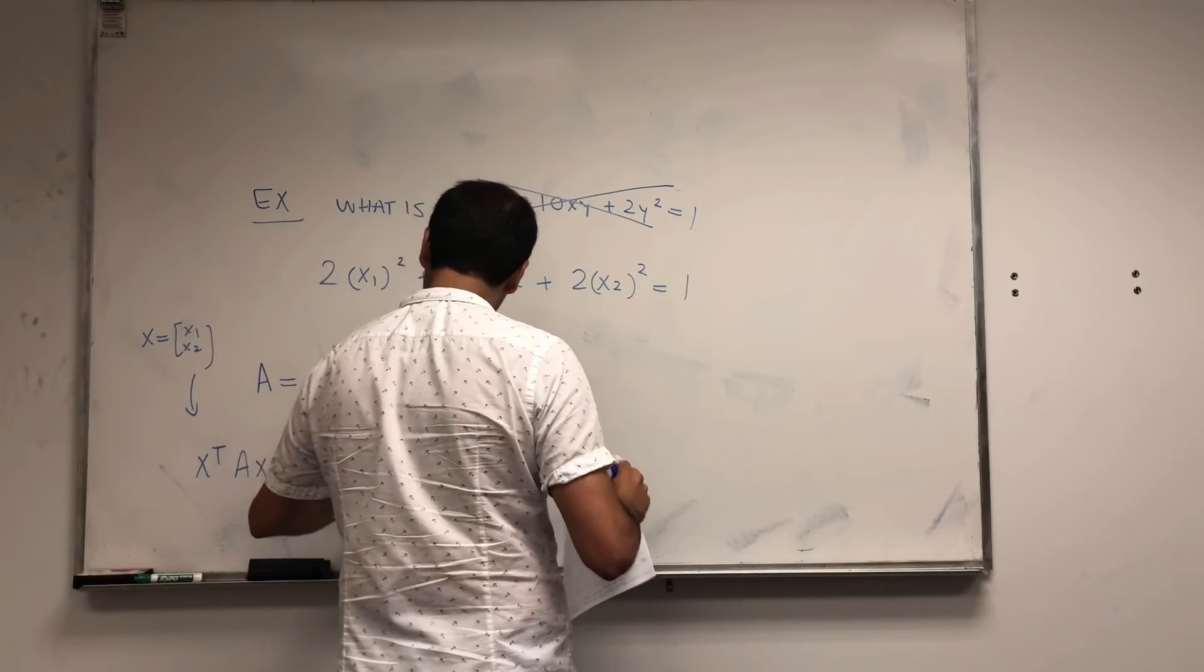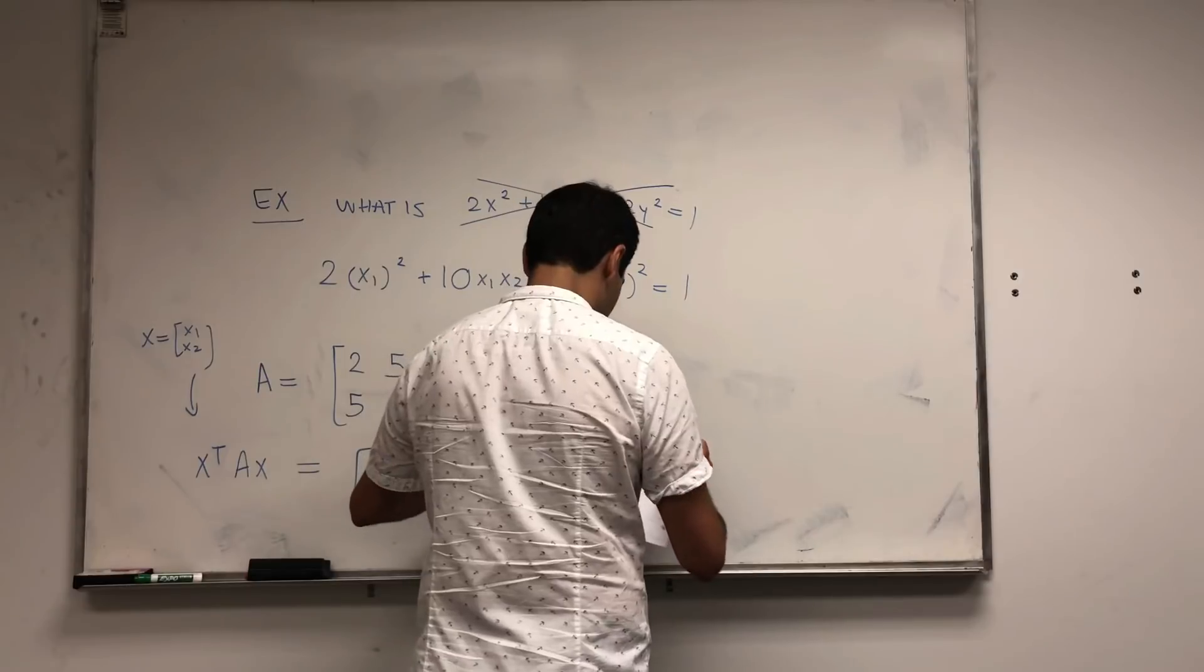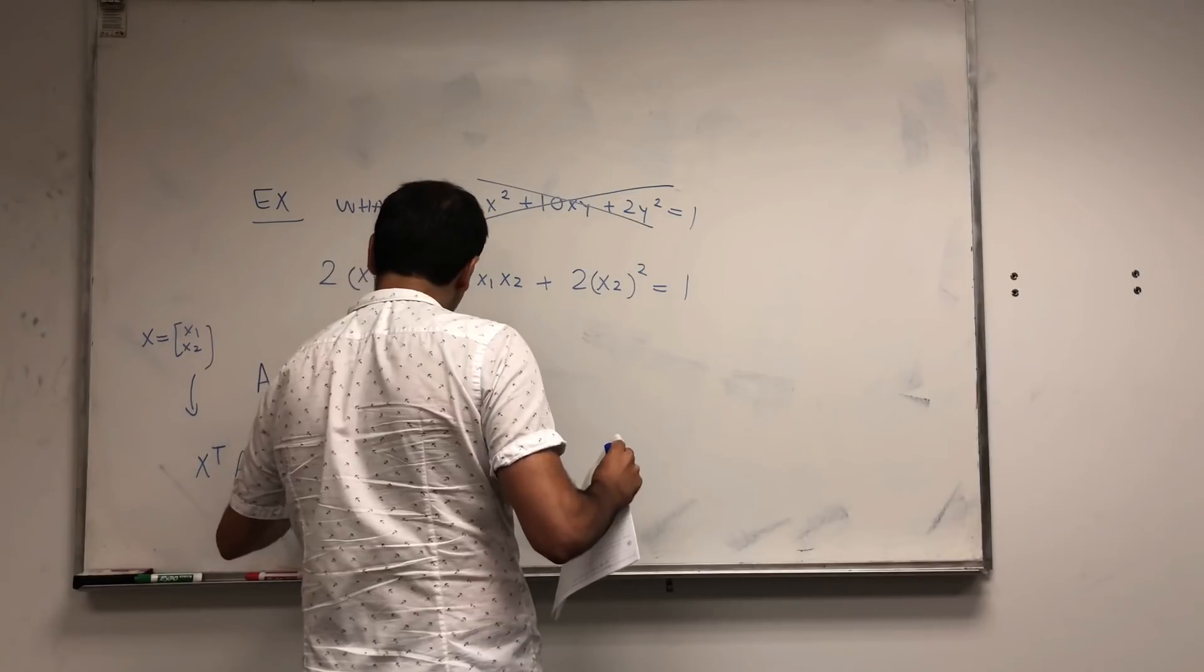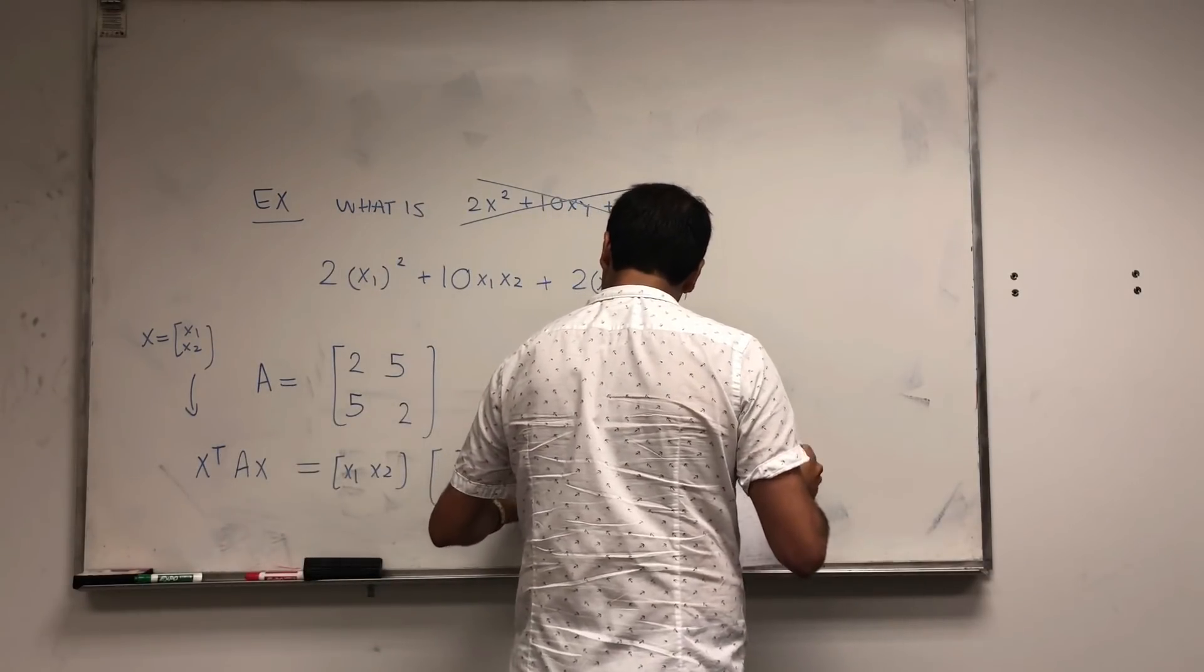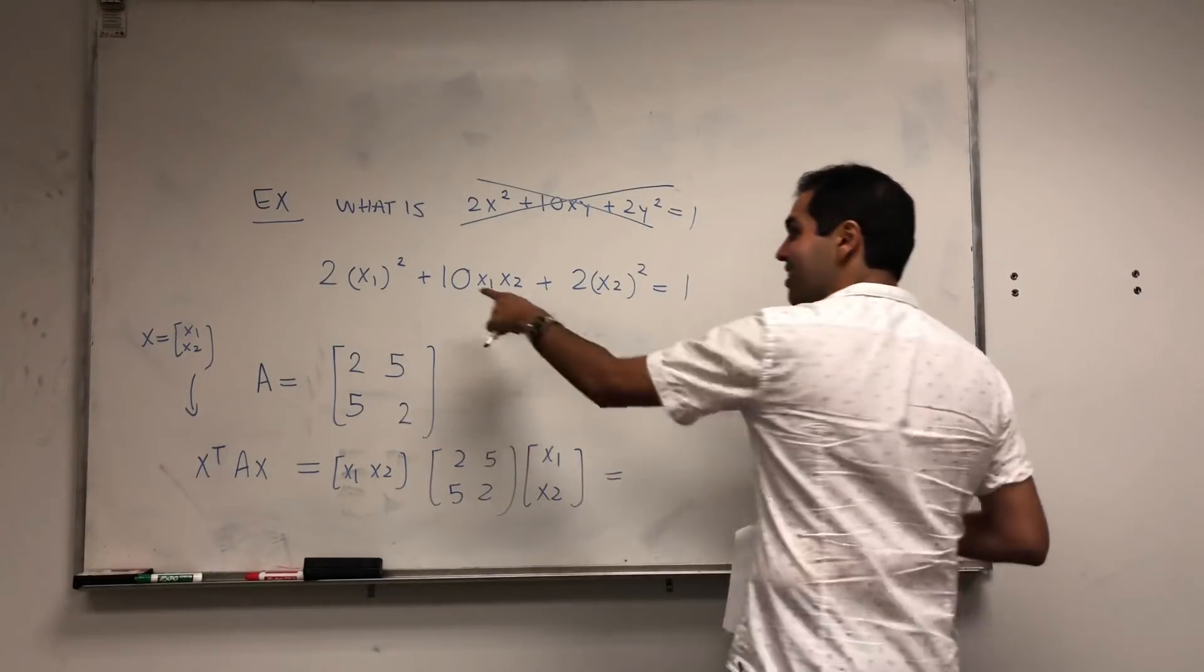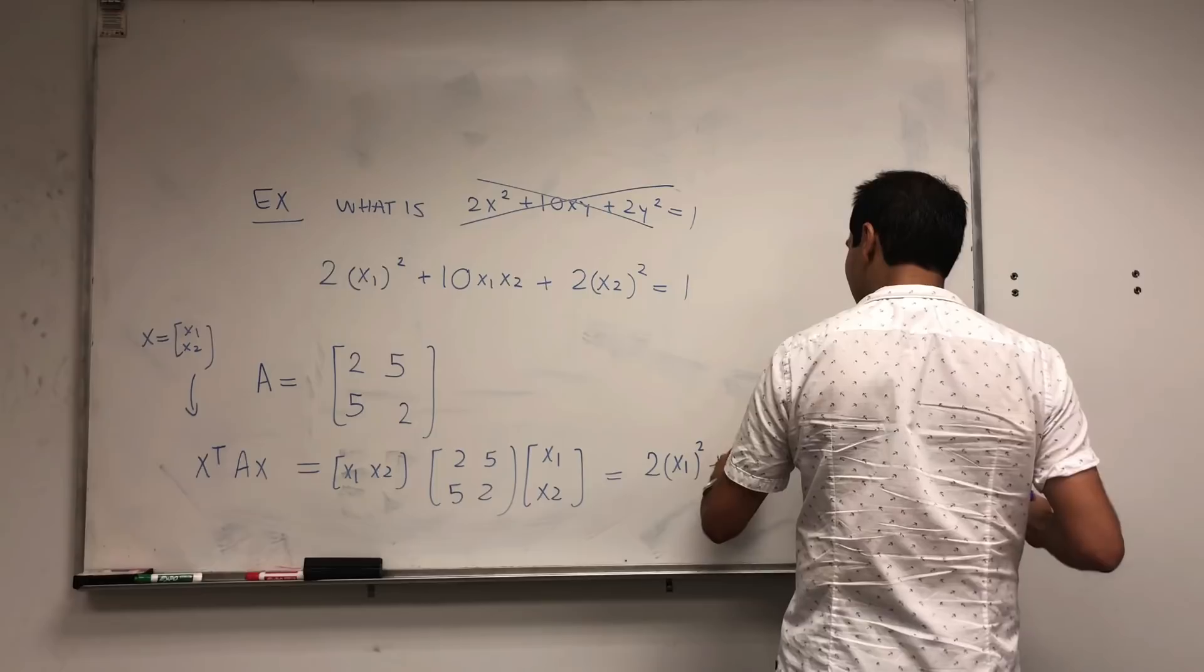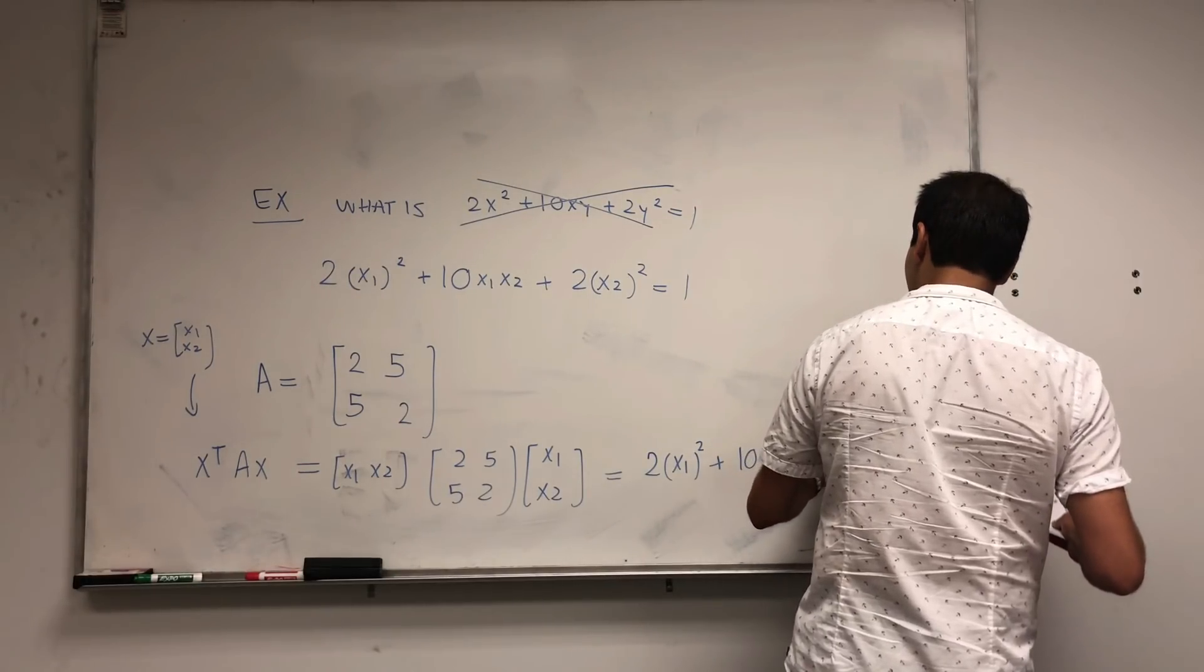Well, if you calculate this, X1, X2, times the matrix 2, 5, 5, 2, times X1, X2. If you actually calculate the whole thing, turns out you get the original quadratic form back. So 2X1 squared plus 10X1X2 plus 2X2 squared.